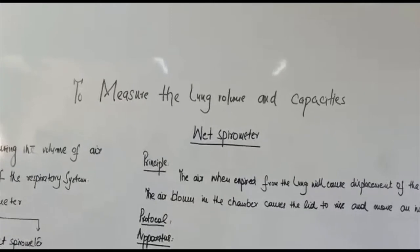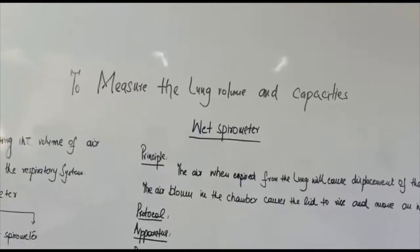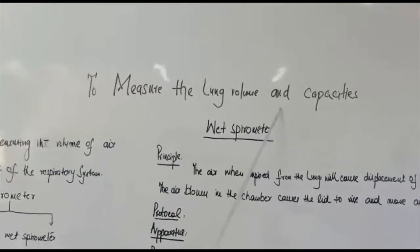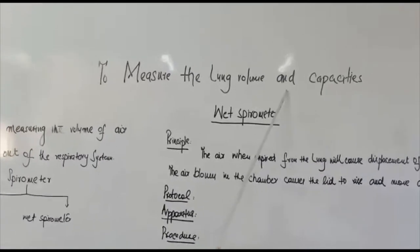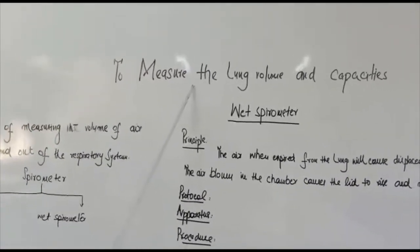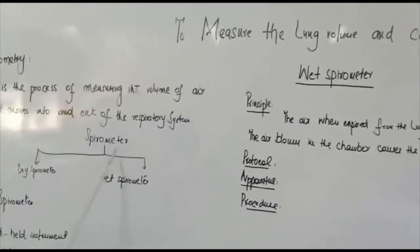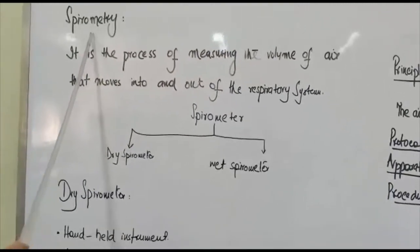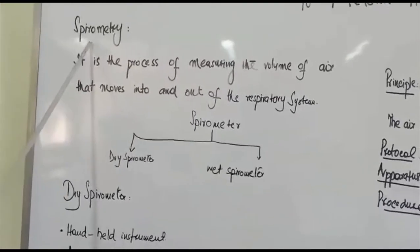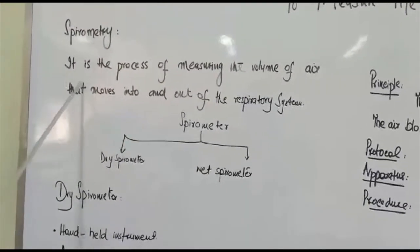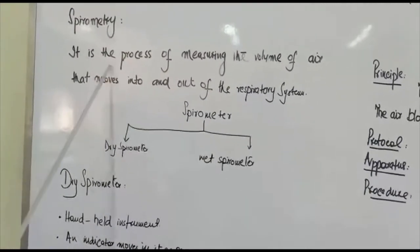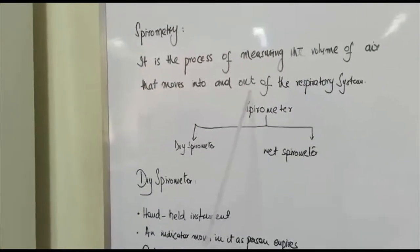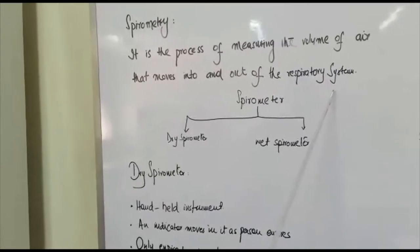Assalamu alaikum. I am Dr. Masuma and today I am going to teach you the practical that is lung volume and capacities — how to measure lung volume and capacities. The instrument used for this practical is the spirometer, and the process to determine lung volume and capacity is known as spirometry. Spirometry is the process of measuring the volume of air that moves into and out of the respiratory system.